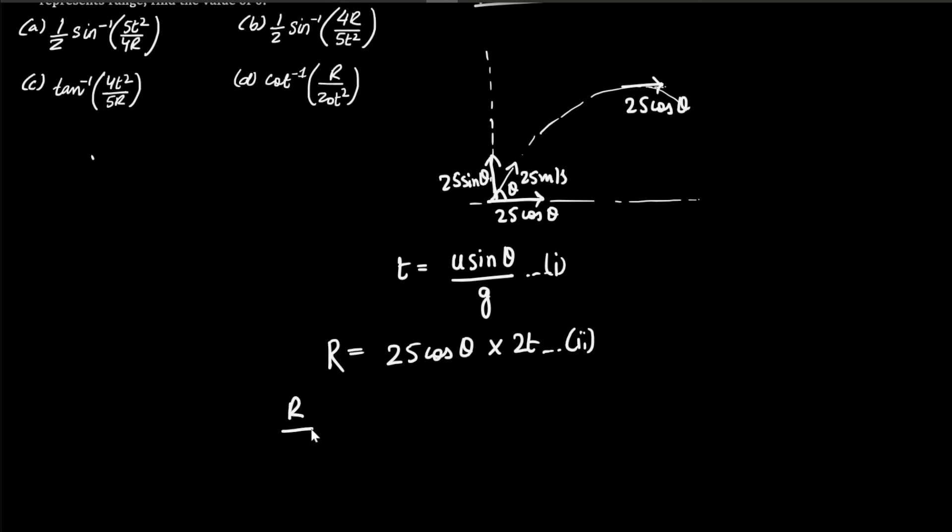Now if we observe that r by t, or rather small t, is equal to, now this u sin theta that I wrote here is basically 25 sin theta. So it's coming to like 25 cos theta into 2t over 25 sin theta and this g can go up here. Now of course this and this is canceling, so we are left with simply cot 2t and g is 10.